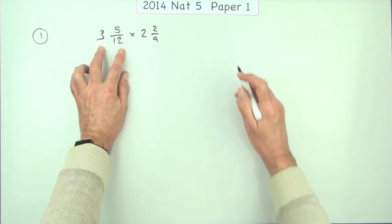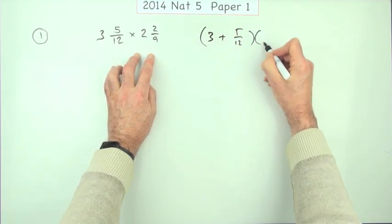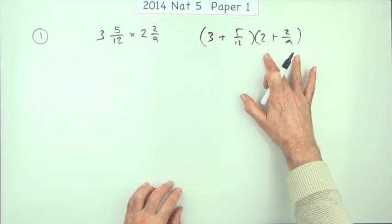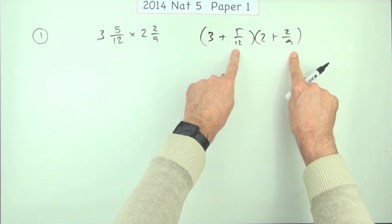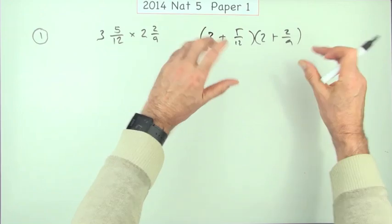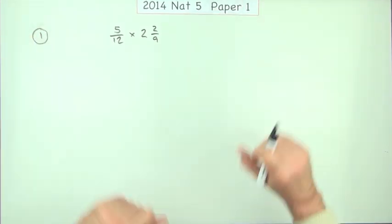After all, what that means is (3 + 5/12) times (2 + 2/9), a bracket times a bracket. There's your four multiplications: 3 times 2, 3 times 2/9, 2 times 5/12, and 5/12 times 2/9. Get your four answers and add them all together. That'd be far too lengthy.